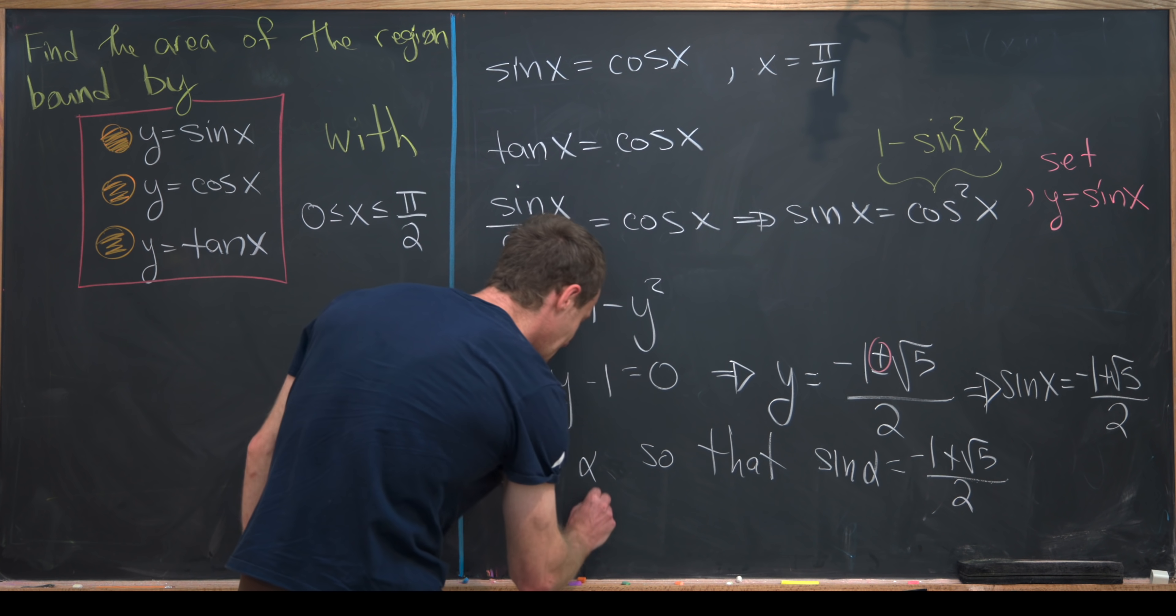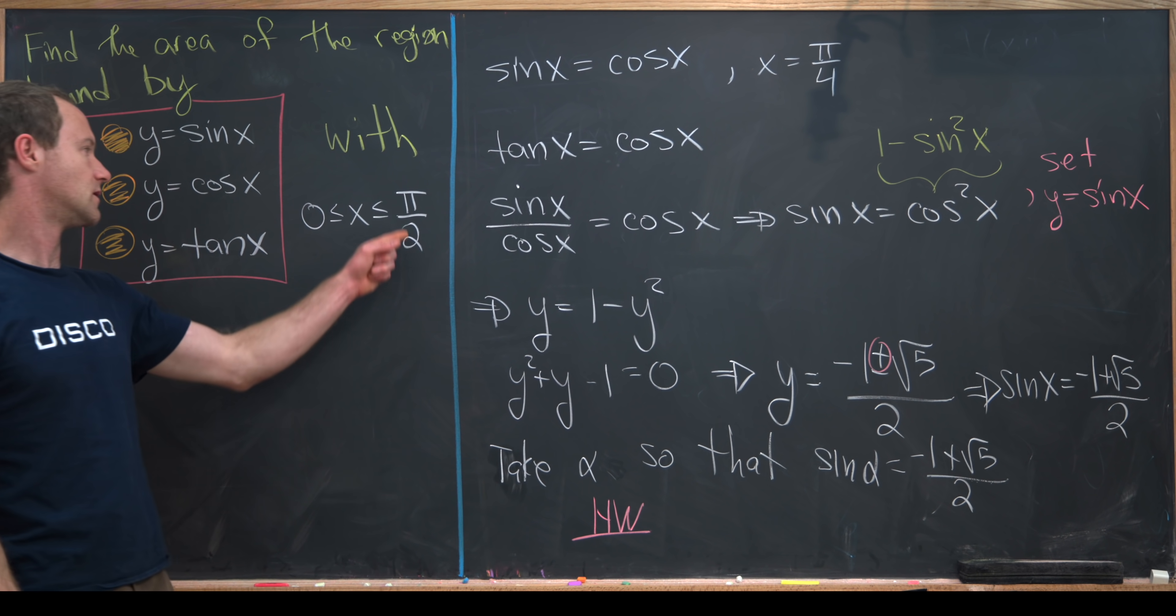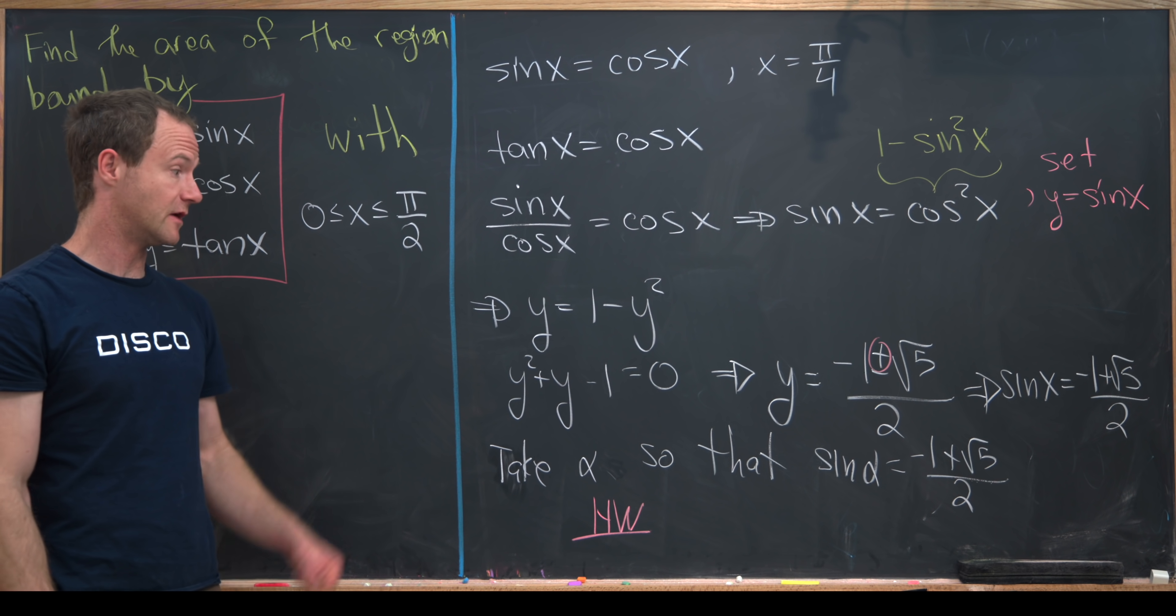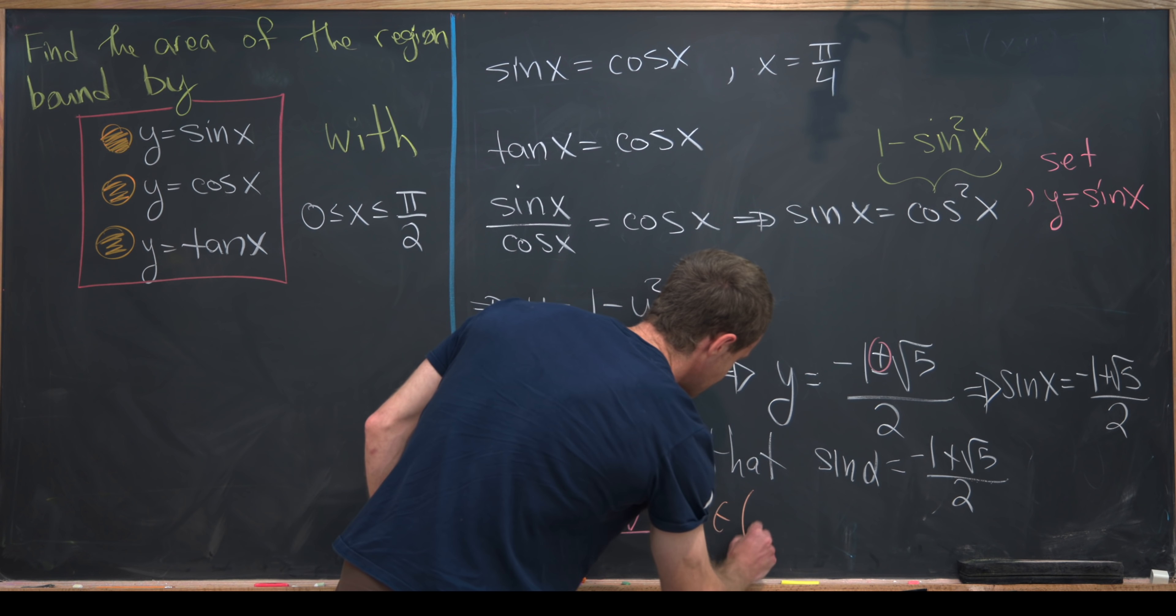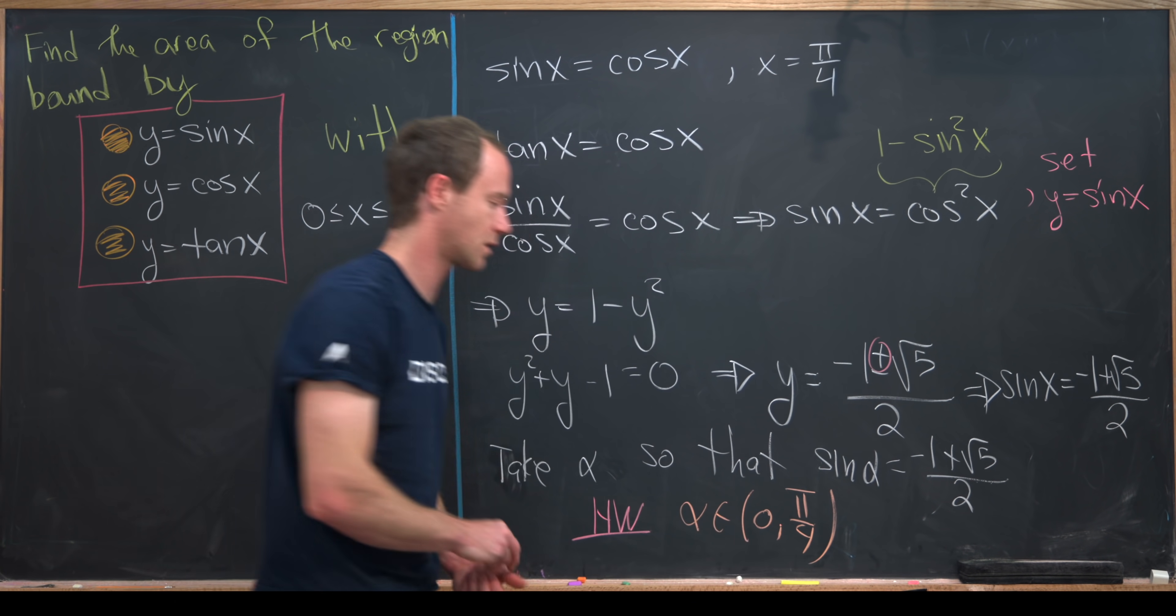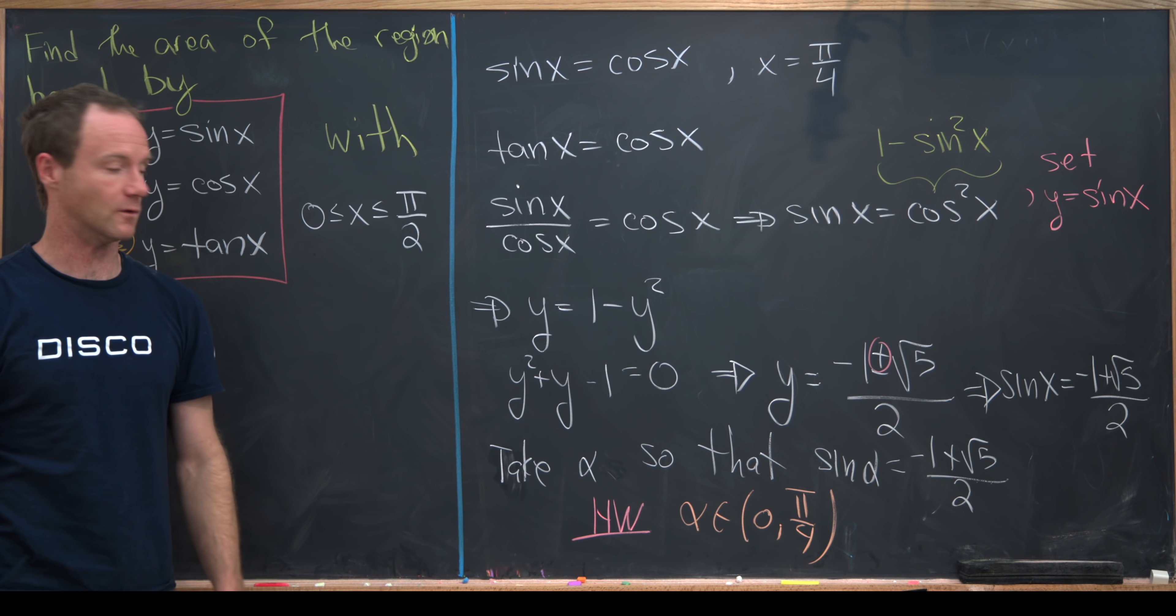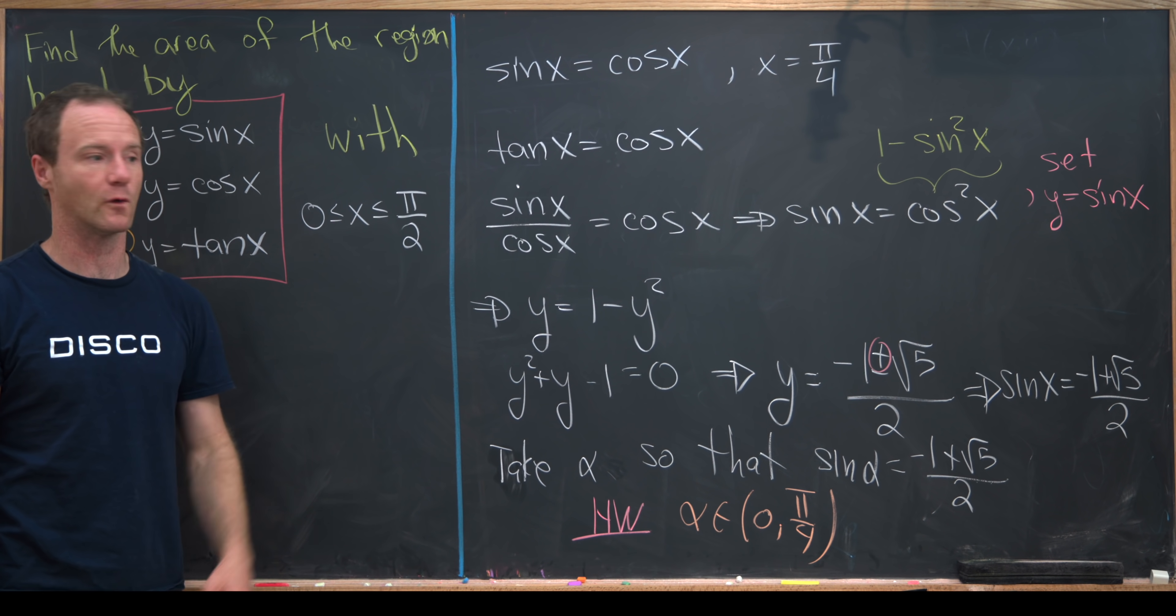Maybe next, and I'll leave this for homework, we really need to check where alpha lies along this region from 0 to pi over 2. Through an argument involving the intermediate value theorem again, you can check that alpha is in fact on the open interval from 0 to pi over 4. So we've got this intersection point of sine and cosine at pi over 4, and this intersection point of cosine and tangent at alpha, which is before pi over 4.